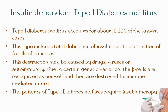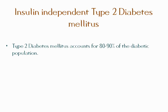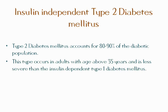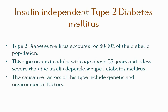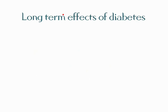Type 2 diabetes mellitus accounts for 80 to 90 percent of the diabetic population. It occurs in adults above 35 years of age and is less severe than type 1. Causative factors include genetic and environmental factors, and it occurs more commonly in obese individuals — obesity leads to a decrease in insulin receptors. Patients may have normal or even increased insulin levels. It is suggested that overeating causes increased insulin production but decreased synthesis of insulin receptors.